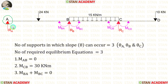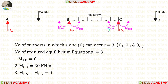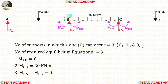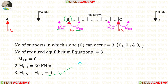At point A, there will be no moment, so MAB equals 0. This is our first equilibrium equation. We have already calculated MCB, which equals 30 kN·m. This is our second equilibrium equation. At joint B, the summation of moments will be 0: MBA plus MBC equals 0. This is our third equilibrium equation.